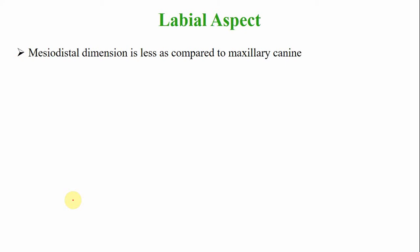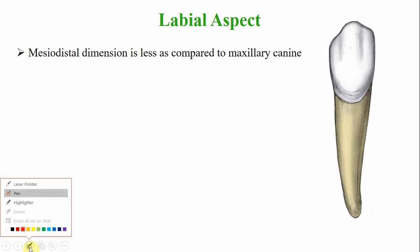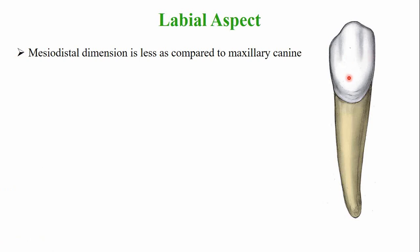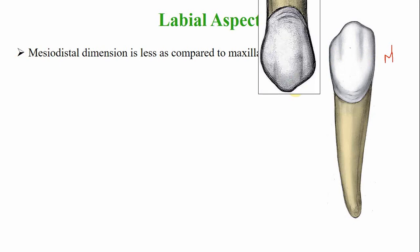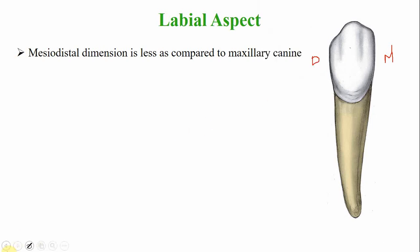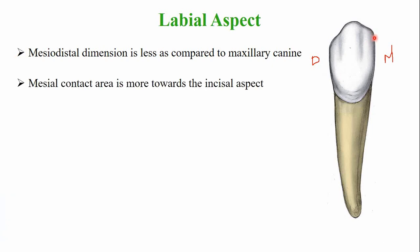From the labial aspect: the mesiodistal width of the mandibular canine is less compared to the mesiodistal dimension of the maxillary canine. The mesial contact area is more towards the incisal aspect, while the distal contact area is located more towards the junction of the incisal and middle third of the crown.